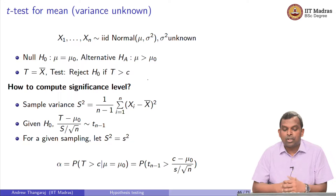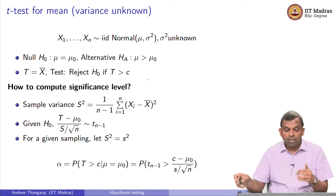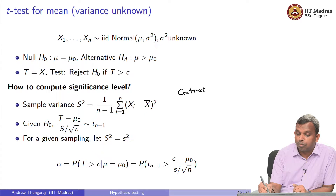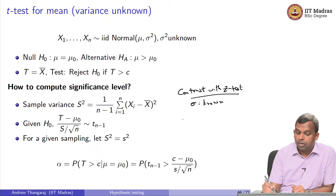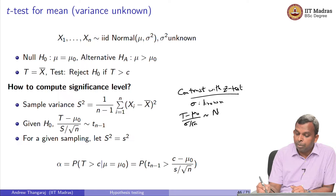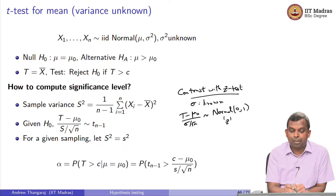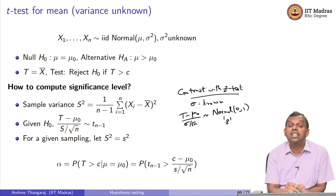To compute the significance level, you first find the sample variance. Then, given H naught, you will see that (x-bar minus mu naught) divided by S over root n follows the T distribution. Contrast this with the Z test where sigma is known: (x-bar minus mu naught) divided by sigma over root n follows Normal(0,1), which is Z. When sigma is unknown, you estimate it as the sample variance, and probabilities use T_{n-1}.